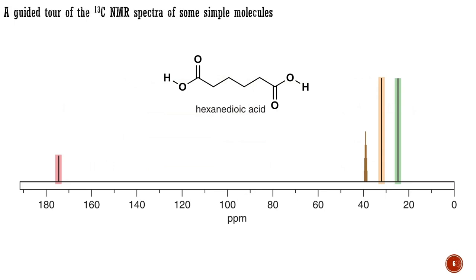On to some real carbon NMR spectra. Our very first compound, hexane dioic acid, has a simple NMR spectrum. The first question is: why only three peaks for six carbon atoms? This is because of the symmetry of the molecule. The two carboxylic acids are identical and give one peak at 174 ppm. For the same reason C2 and C5 are identical, and C3 and C4 are identical. These are all in the saturated region, but the carbons next to the electron-withdrawing carboxyl group will be more deshielded than the others. So we assign C2 and C5 to the peak at 33 ppm and C3 and C4 to the peak at 24 ppm.